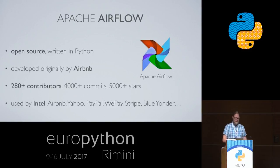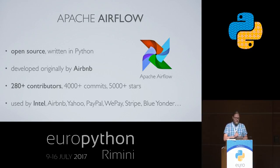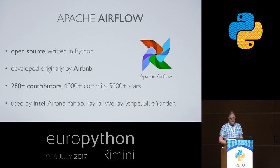Apache Airflow is an open source project written entirely in Python using well-known Python open source technologies. It's based on Flask and uses Celery. It was originally developed by AirBnB, but it's grown very quickly and extensively over the last couple of years. It currently has almost 300 contributors, 4,000 commits, and many stars on GitHub. It's used by hundreds of companies — we're using it at Intel, Airbnb uses it, and Yahoo, PayPal, and many others are using it as well.